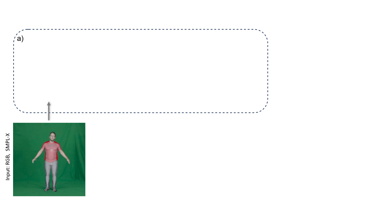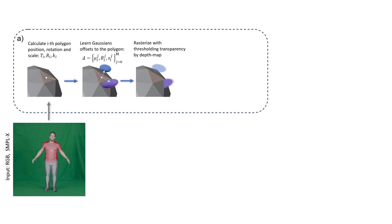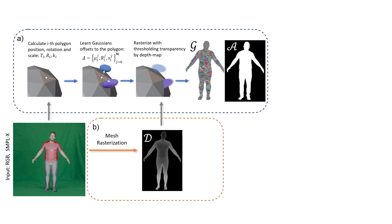In the first stage, we learn a full Gaussian representation of the avatar. For each mesh polygon, we calculate the coordinates of its center, the quaternion rotation, and the scale. Then we calculate the parameters of the Gaussians attached to each SMPL-X polygon as offsets to the polygon transformations, and rasterize these Gaussians. We use a differentiable mesh rasterizer to calculate the SMPL-X depth map D, and use this depth map as additional input to our modified 3D Gaussian splatting rasterizer to avoid rendering Gaussians overlapped with the mesh.